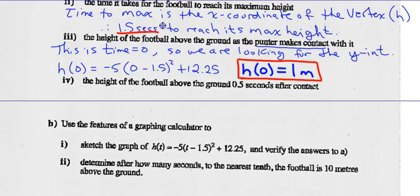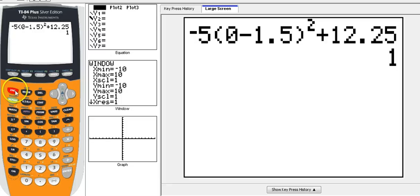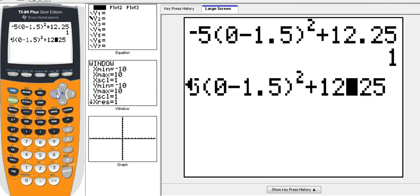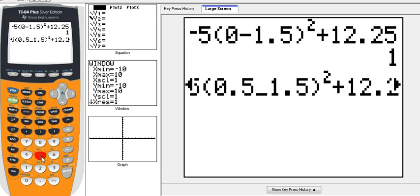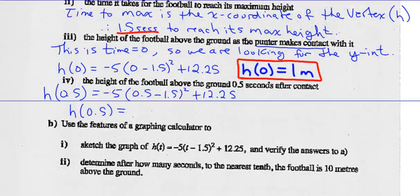Part 4. What's the height of the football above the ground 0.5 seconds after contact? So again, we've got the equation. Height at time 0.5 seconds would be negative 5 times (0.5 minus 1.5) all squared plus 12.25. So the height at 0.5 seconds would be easy to calculate because we just did that on our calculator. Go second entry and change 0 into 0.5. Insert 0.5 and press enter. And that is 7.25 meters. So height at 0.5 seconds is 7.25 meters.